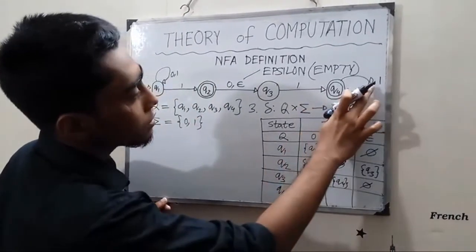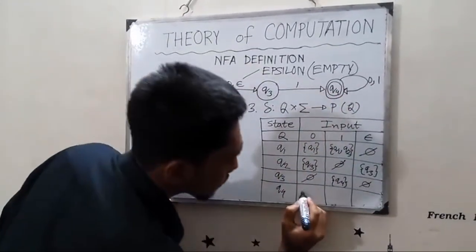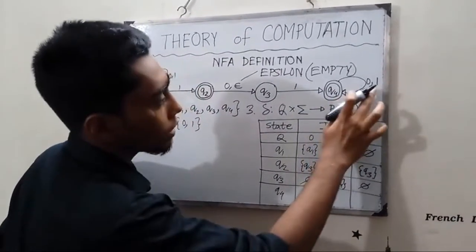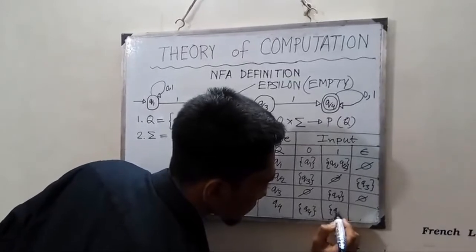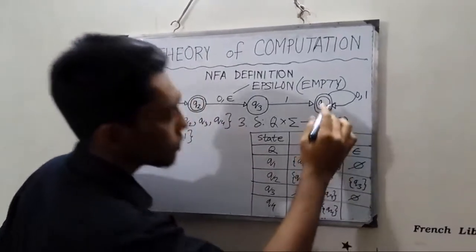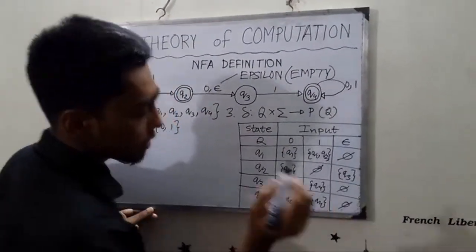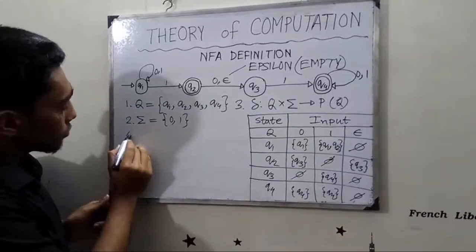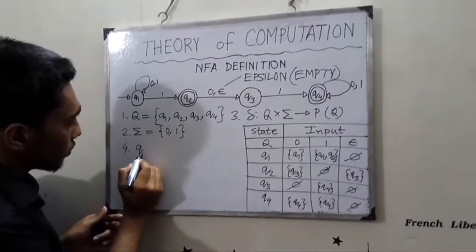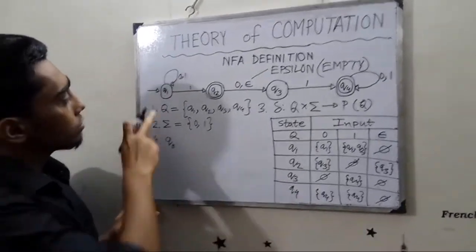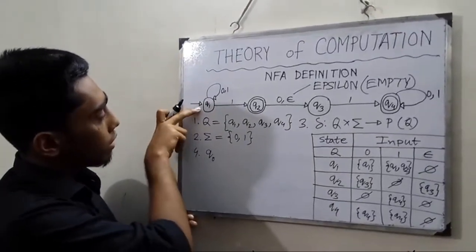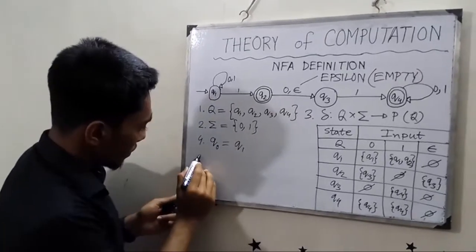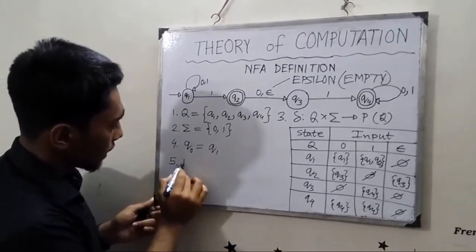From Q4 reading 0, we stay at Q4. From Q4 reading 1, we stay at Q4. The final state is not Q1 — Q1 is not in the set of final states.